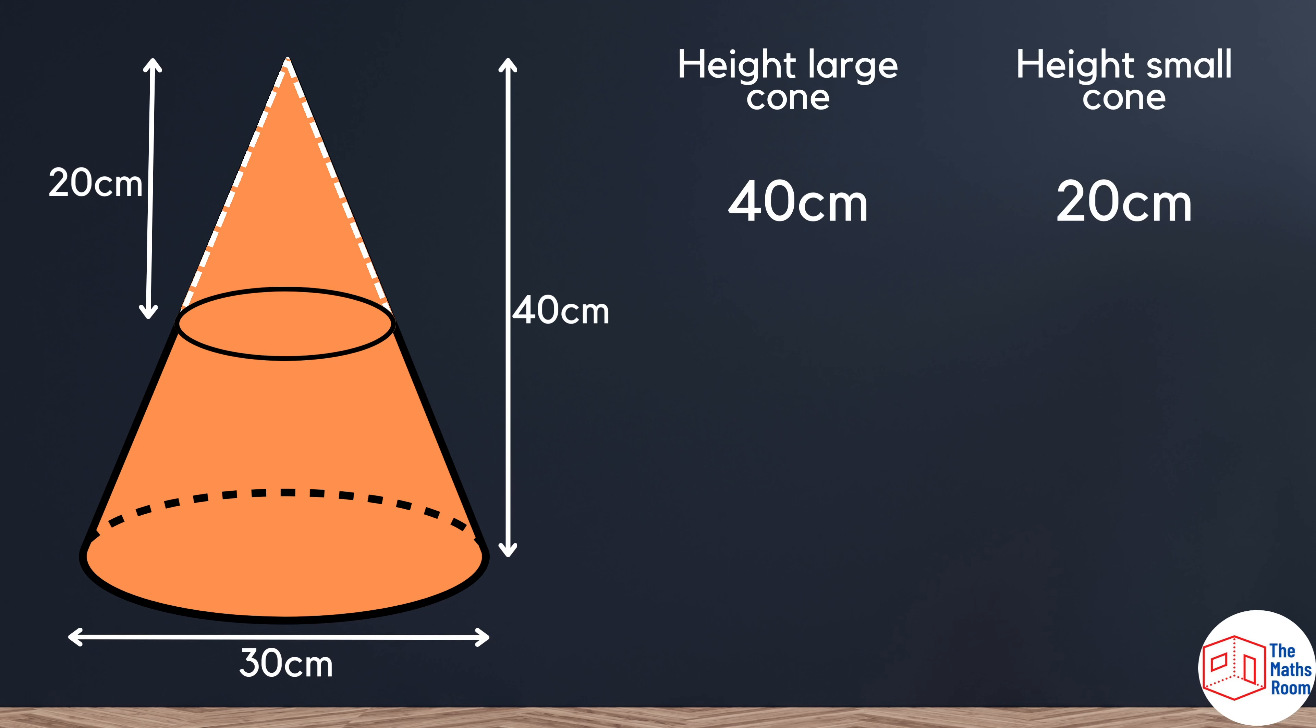We know from our formula that we need the radius of the small and large cones. We're given the height of both, but not the radius of both. The height of the large cone is 40 and the height of the small cone is 20. So we need to divide the large cone by 2 to get the height of the small cone.